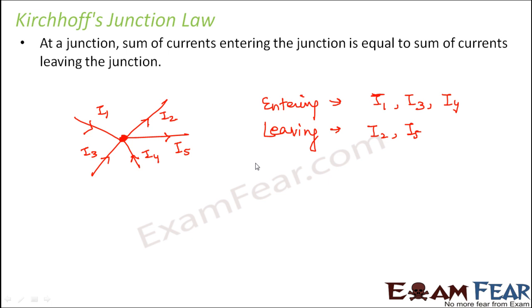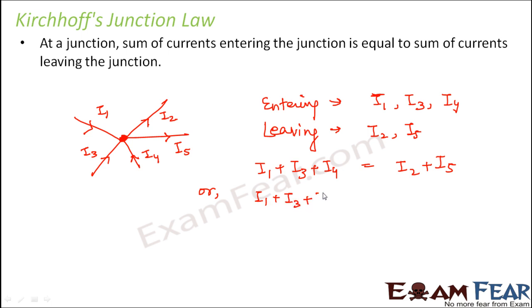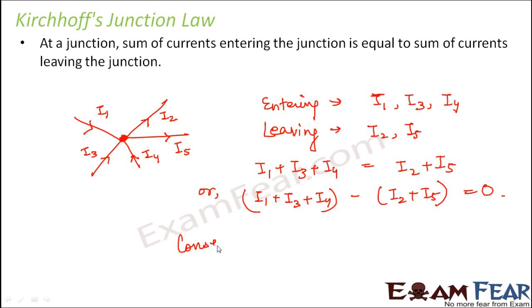As per Kirchhoff's Junction Law, the sum of the currents entering the junction is equal to the sum of the currents leaving the junction — that is, I1 + I3 + I4 = I2 + I5, or equivalently I1 + I3 + I4 − I2 + I5 = 0. This law is based on conservation of electric charge, which says that the total charge coming in and the total charge going out balance each other.